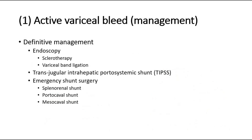Definitive management includes endoscopy, which confirms the diagnosis and provides treatment such as sclerotherapy or variceal band ligation. Ligation is superior to sclerotherapy for initial control of bleeding and has fewer adverse effects. Another definitive option is transjugular intrahepatic portosystemic shunt (TIPSS), involving placement of a stent between the hepatic vein and portal vein. Emergency shunt surgery can also be performed, including splenorenal shunt, portocaval shunt (joining the portal vein to the inferior vena cava), or mesocaval shunt (joining the superior mesenteric vein to the inferior vena cava).